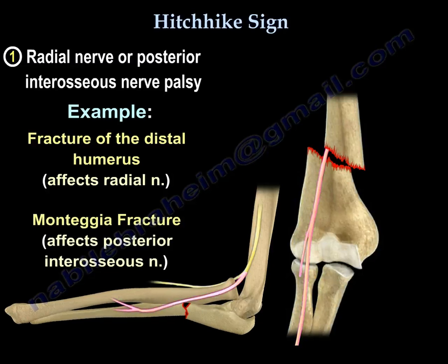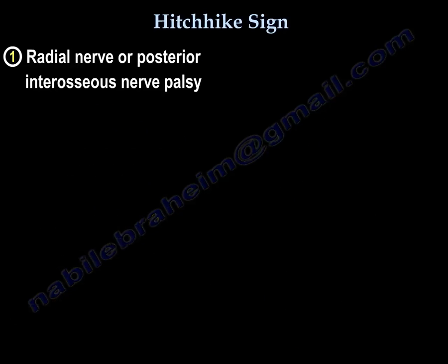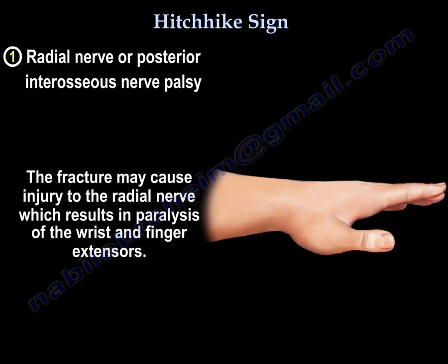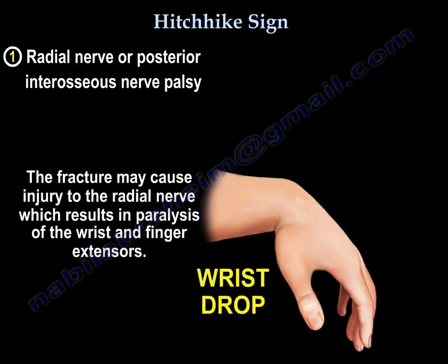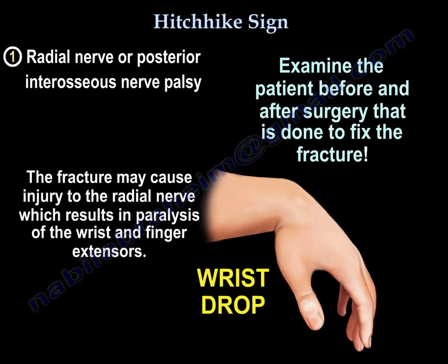In both conditions, the fracture or surgery may cause injury to the radial nerve or to the posterior interosseous nerve, which will result in paralysis of the wrist and finger extensors. Examine the patient before and after surgery, and also before and after any closed reduction of fractures around the elbow, to assess for radial nerve or posterior interosseous nerve palsy.